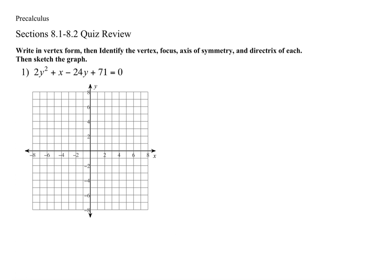When deciding which way this parabola is going to open, since my y is squared, this is going to open left or right. Which means I need to get the x completely by itself. If that x were negative, I would bump the x over. I'm just trying to get the x positive and by itself.